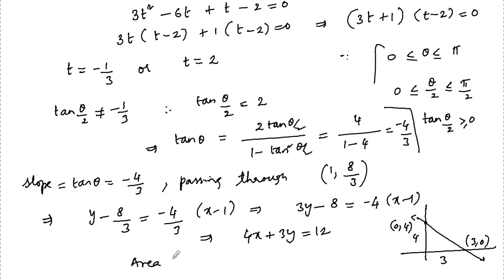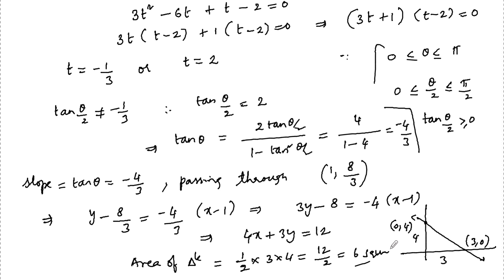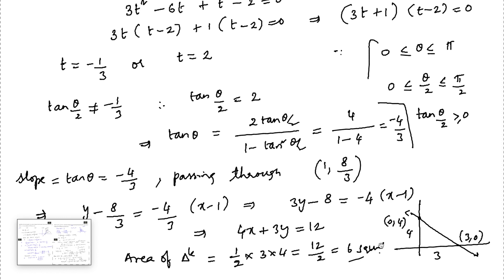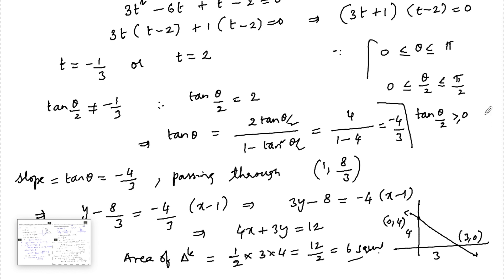The area of the triangle formed with the coordinate axes is (1/2) × base × height = (1/2) × 3 × 4 = 6 square units. So the answer is 6 square units.